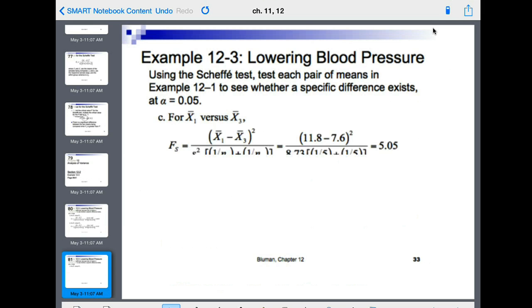And then the third example: X bar 1 minus X bar 3, squared, divided by this. Put the numbers in, means, within, sample size, 1 over sample size, equals 5.05.